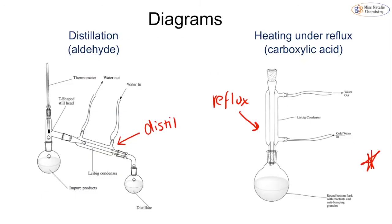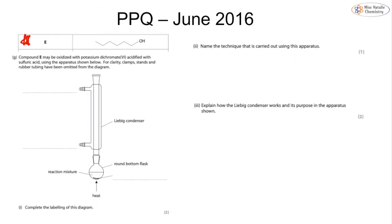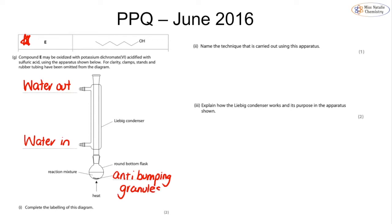We need to be able to label the reflux apparatus diagram. Notice that cold water goes in at the bottom and comes out at the top, and we have our round-bottom flask. At the bottom is water in, at the top water out, and in the round-bottom flask we have the reaction mixture and anti-bumping granules. One mark is for getting the condenser orientation correct and a second mark for the anti-bumping granules. The technique used is heating under reflux, or refluxing.